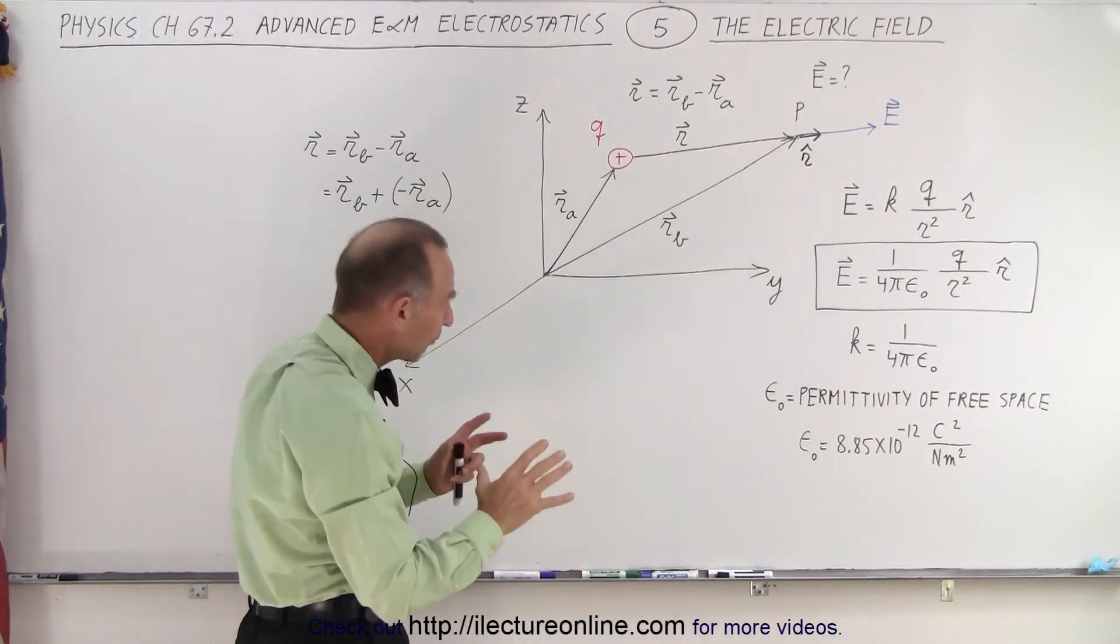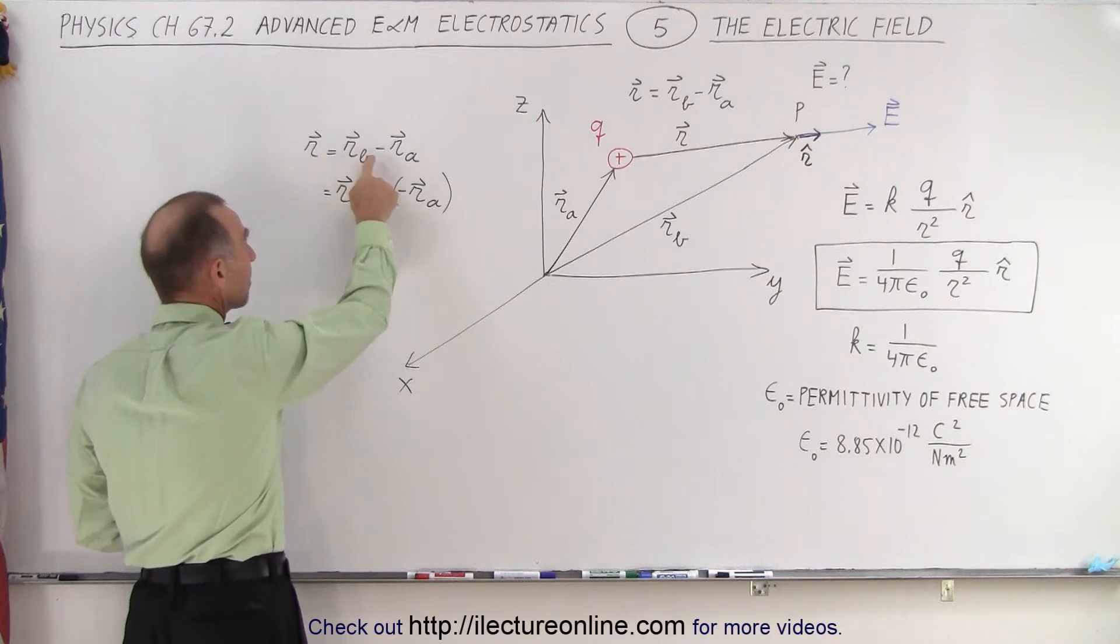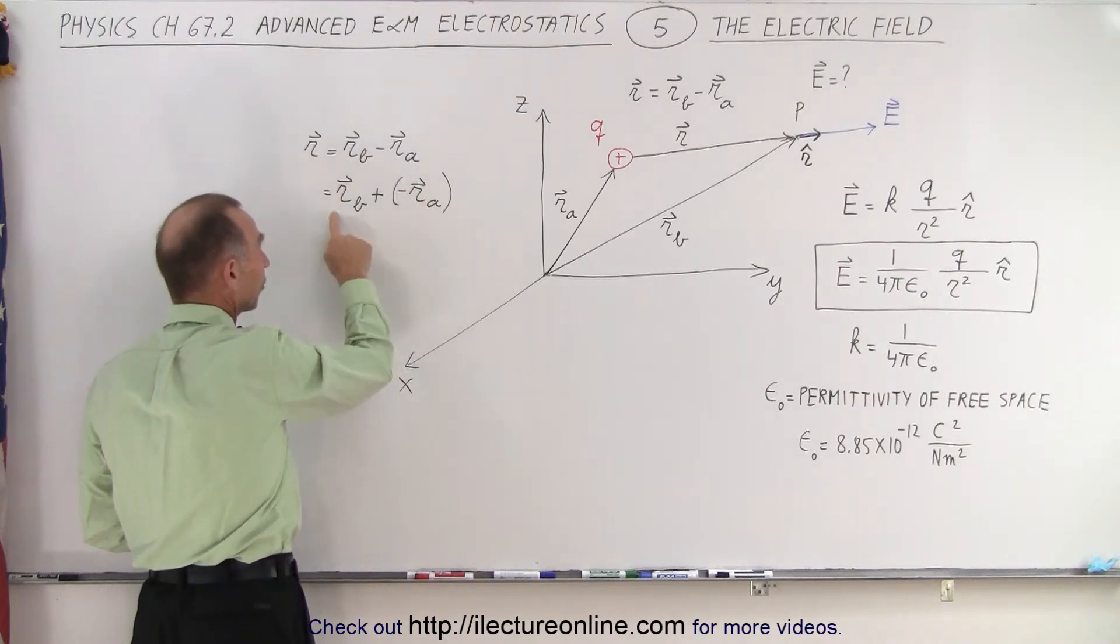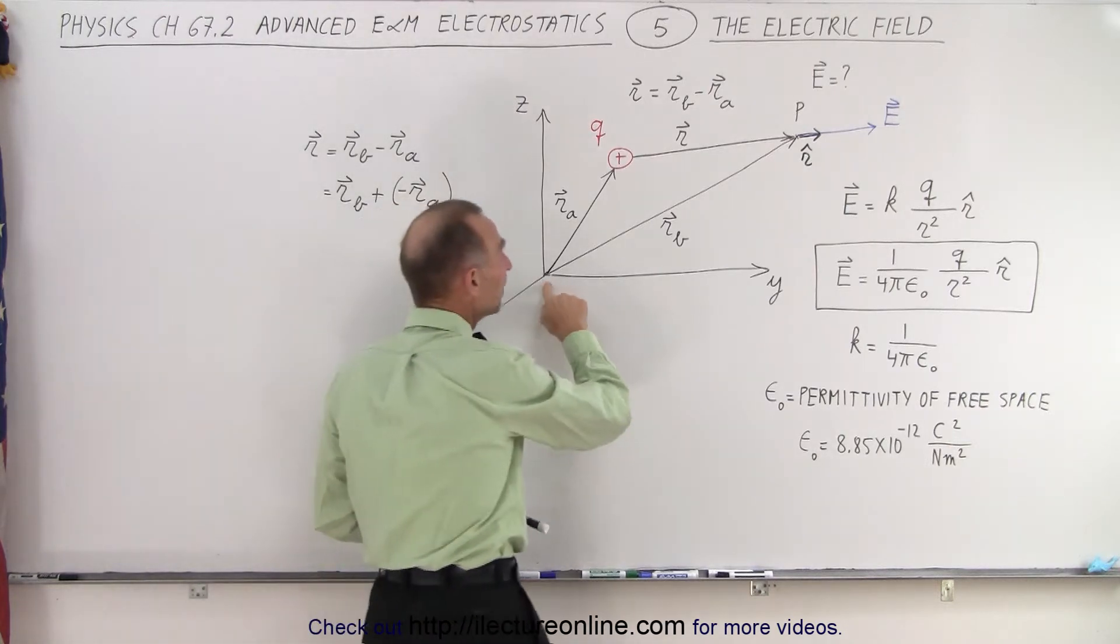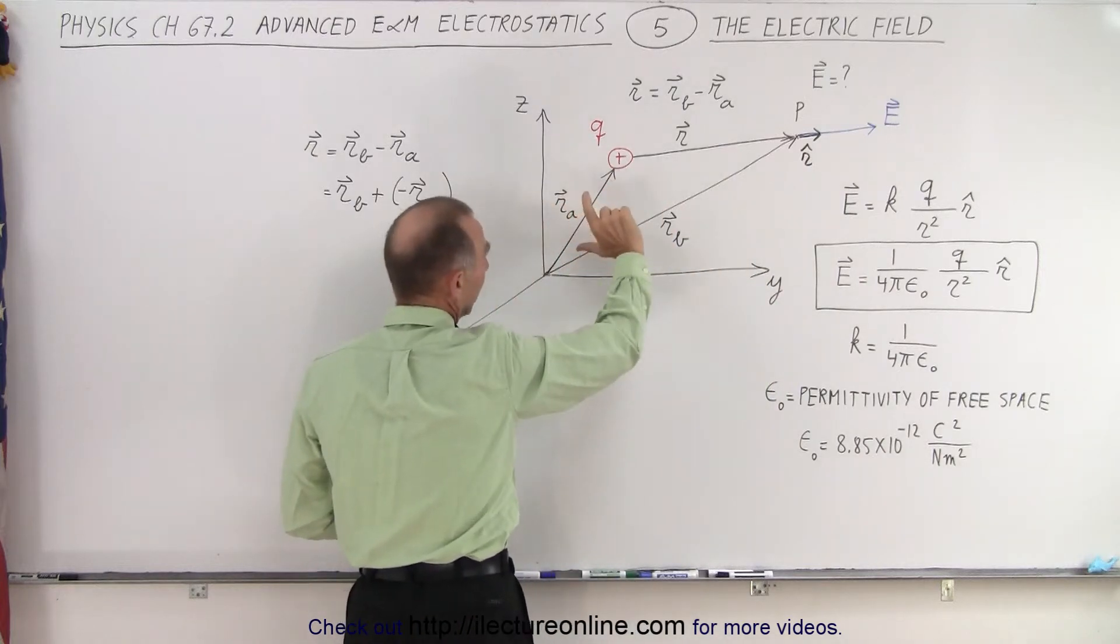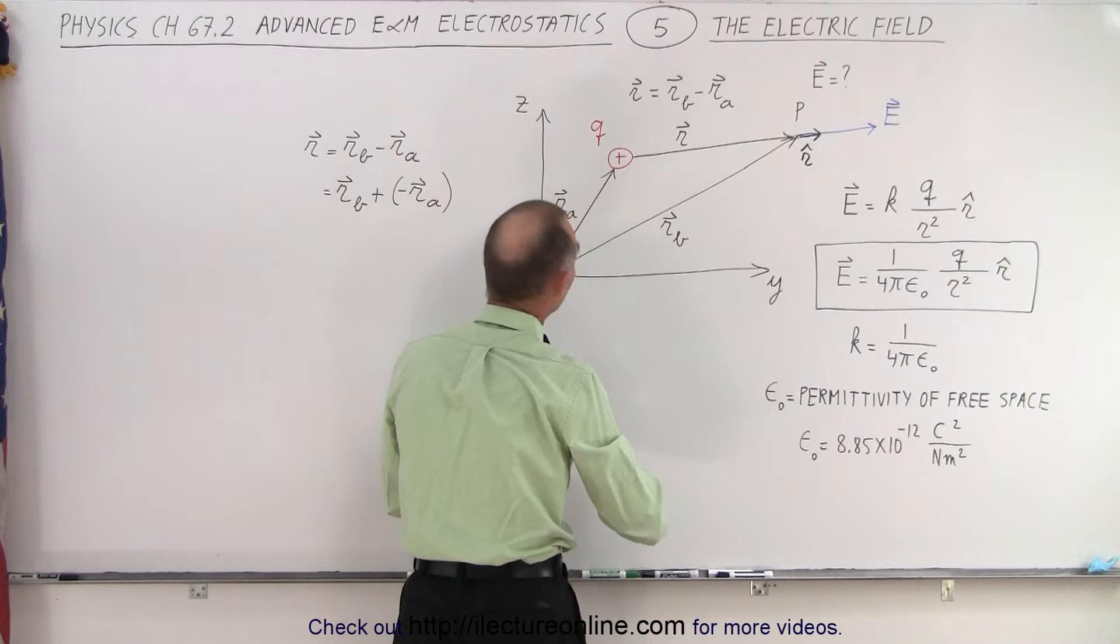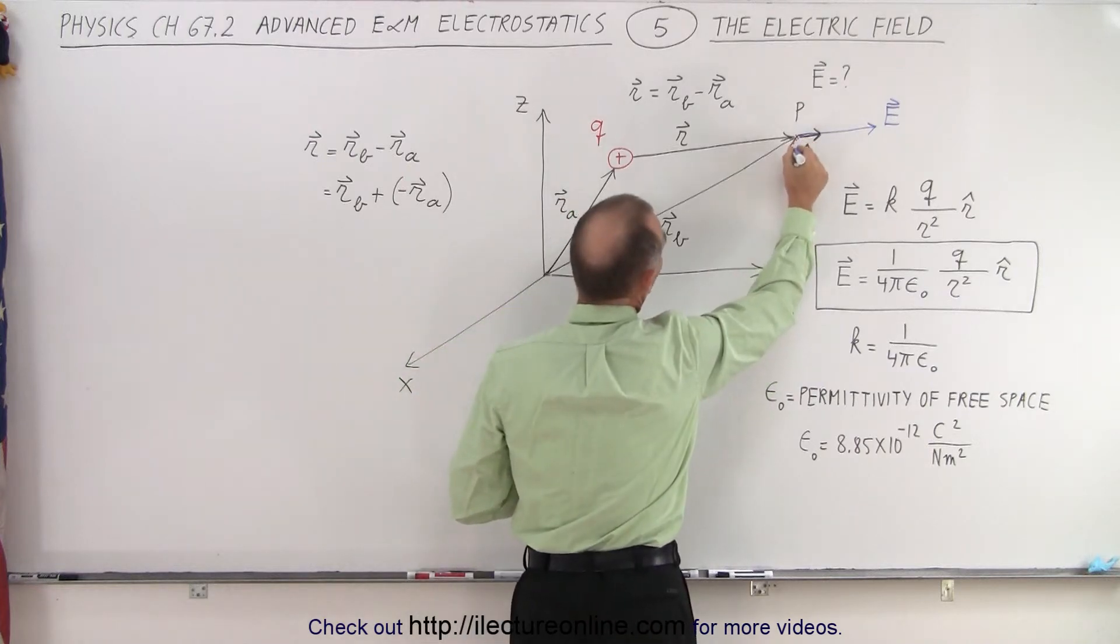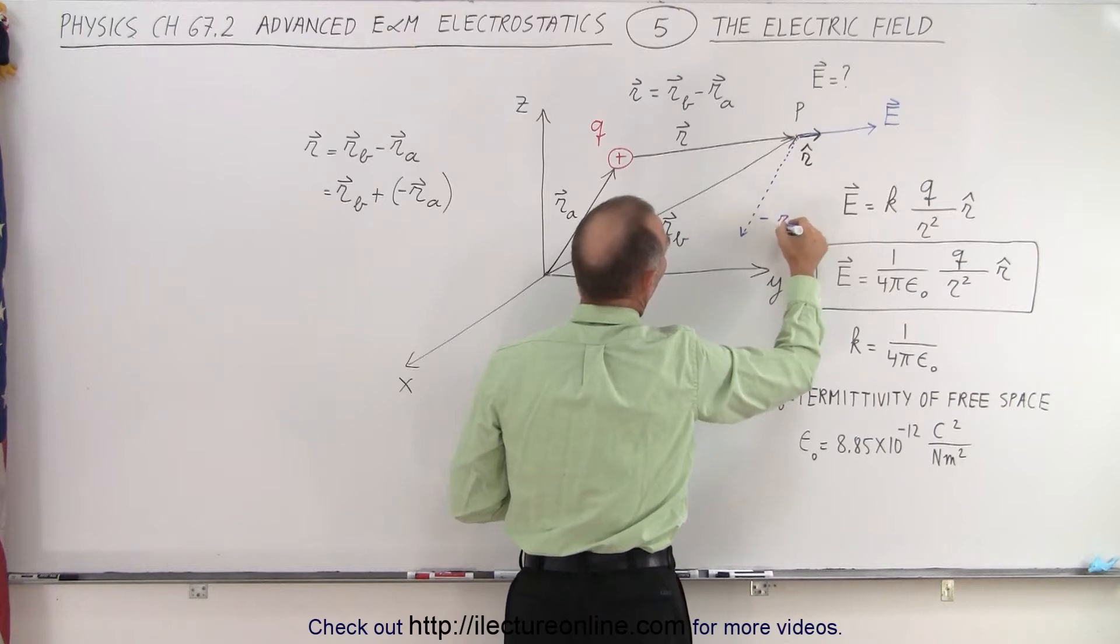If you're not sure how to visualize that, you can say that r sub b minus r sub a is the same as r sub b plus the negative of r sub a. If we go to the tip of r sub b and add to that the negative of r sub a, which is simply r sub a flipped over in the other direction. Let me use a different color for that.